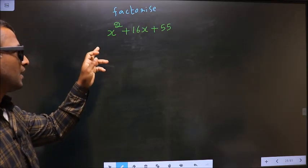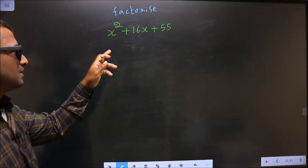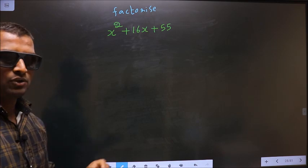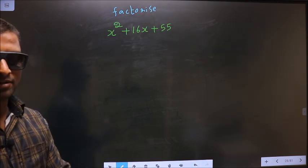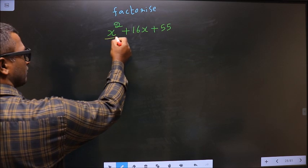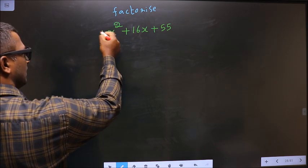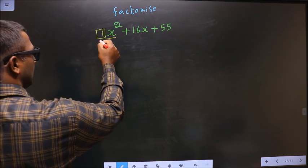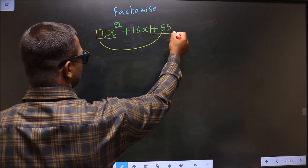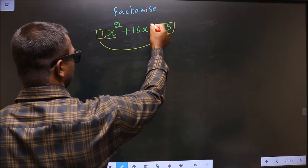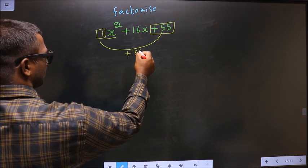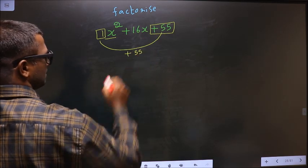Factorize x squared plus 16x plus 55. Step 1: the coefficient of x squared, which is 1 here, should be multiplied to the constant, that is plus 55. So 1 into 55 is 55. This is your Step 1.